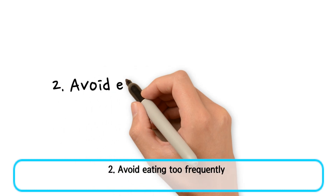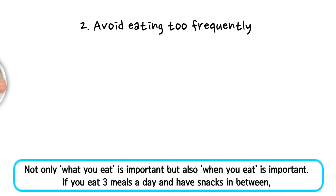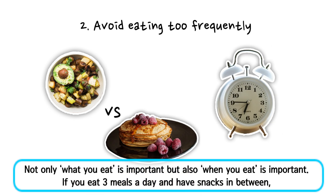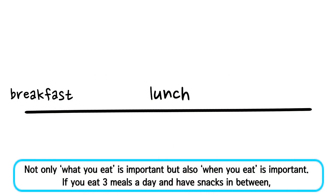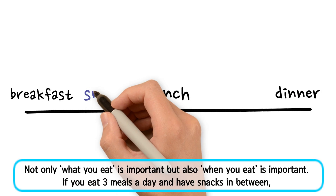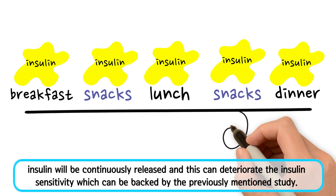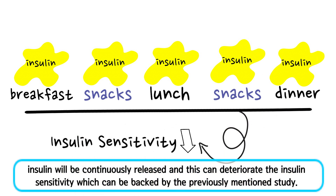Second, avoid eating too frequently. Not only what you eat is important, but also when you eat is important. If you eat 3 meals a day and have snacks in between, insulin will be continuously released, and this can deteriorate insulin sensitivity — which is backed by the previously mentioned study.